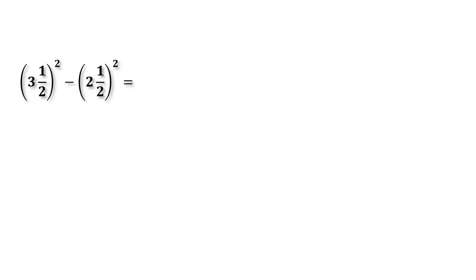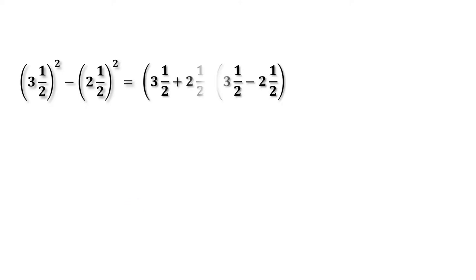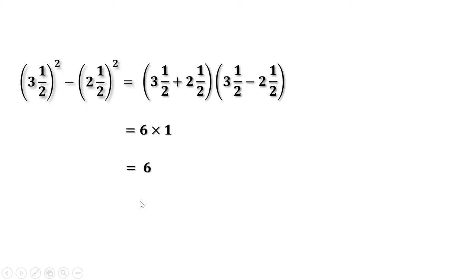Second part: 3.5² - 2.5². a² - b² = (a + b)(a - b). Therefore 3.5² - 2.5² = (3.5 + 2.5)(3.5 - 2.5). 3.5 + 2.5 is 6, and 3.5 - 2.5 is 1. So this equals 6 into 1, which is 6. That means 3.5² - 2.5² = 6.